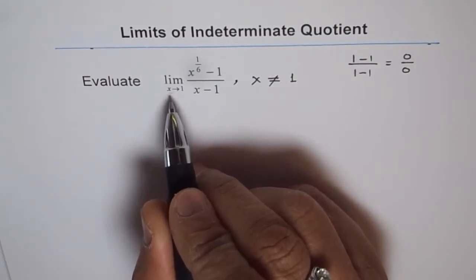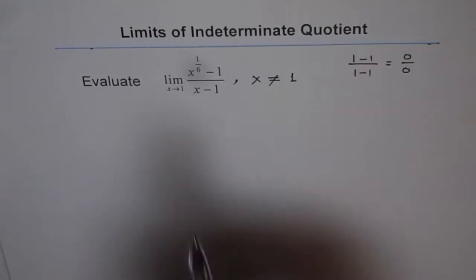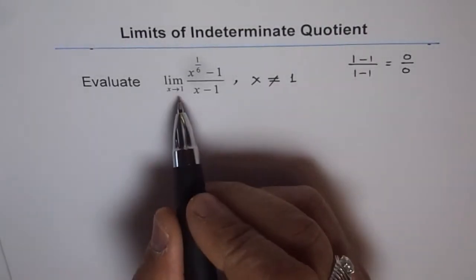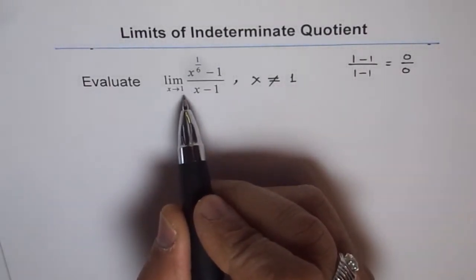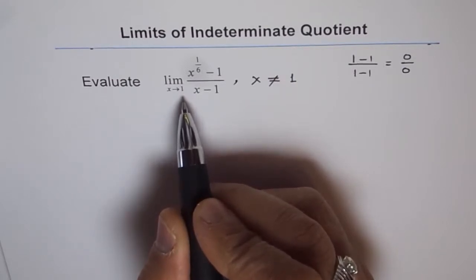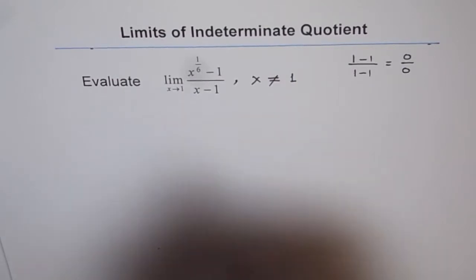The limit is not the value at that point. The limit is the value which a function is approaching as we approach the limiting value. As we approach 1, if a function approaches the same value from both sides, then the function has a limit.